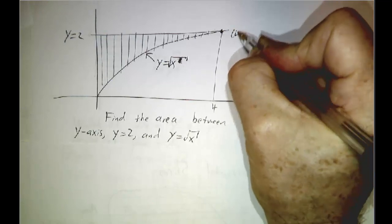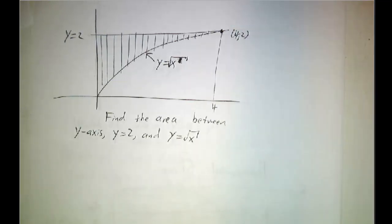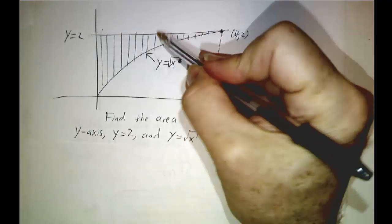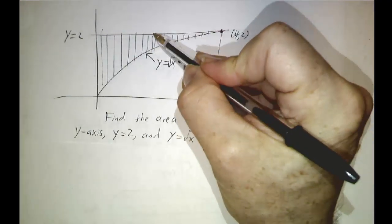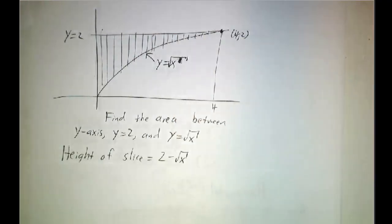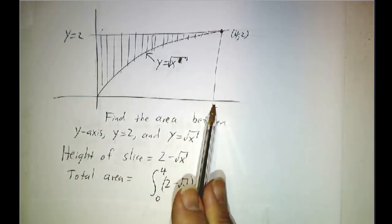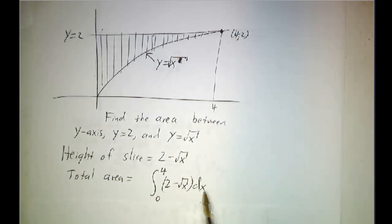So this is the point (4,2). So if we slice vertically, then we say the height at any point is going to be 2 minus the square root of x. We integrate that. So we have to integrate from the smallest value of x to the biggest value of x, 2 minus root x dx.